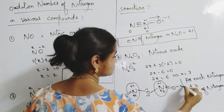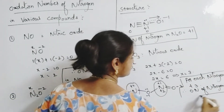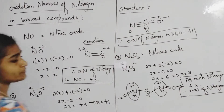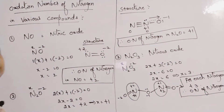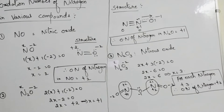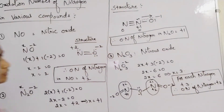Based on the structure also, for each nitrogen we are getting +3 oxidation state. Therefore the oxidation number of nitrogen in N₂O₃ is +3. Please note down the structures.